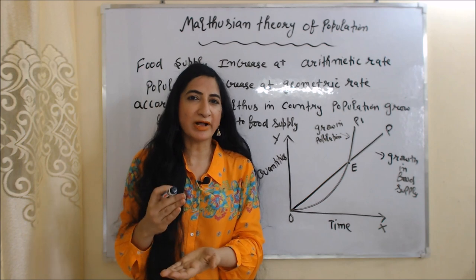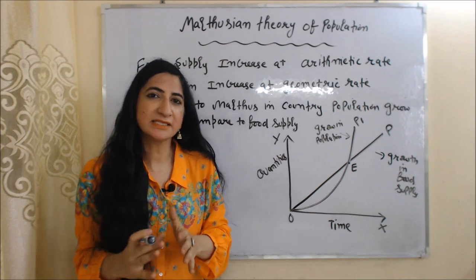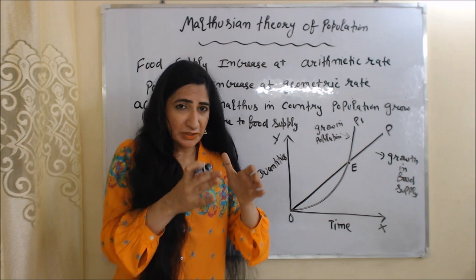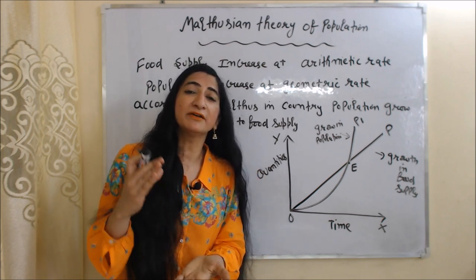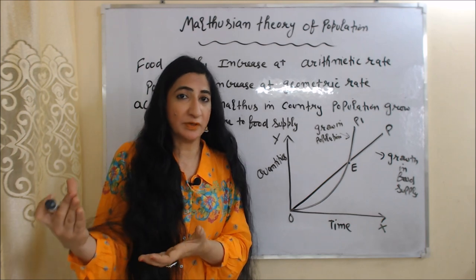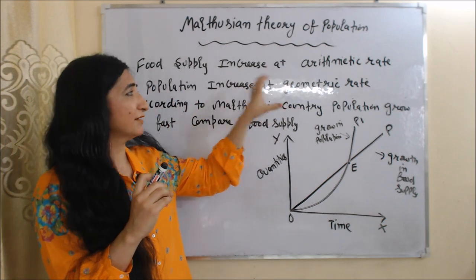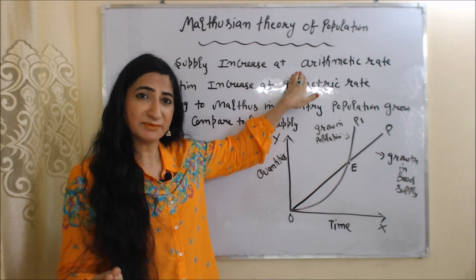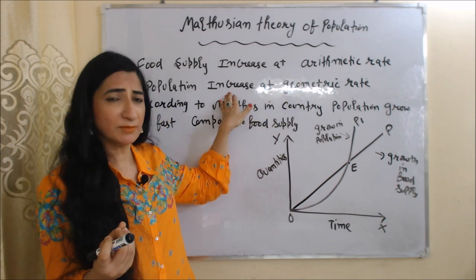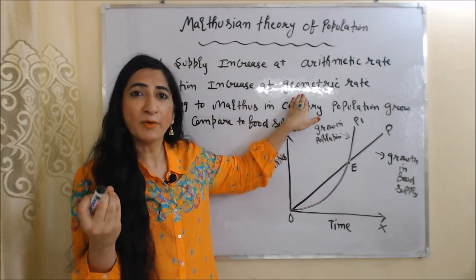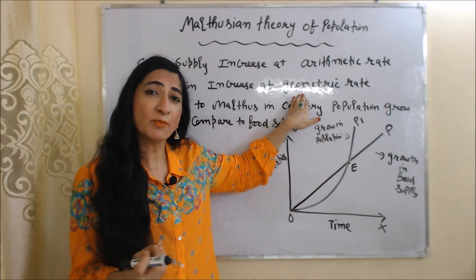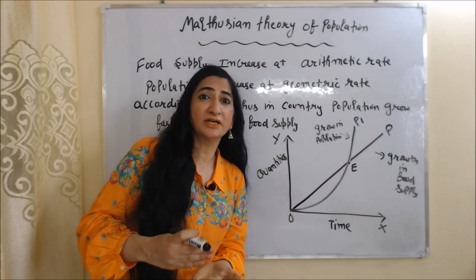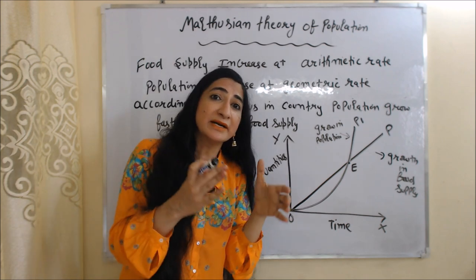First, we are going to talk about the Malthusian theory of population. In this theory, Malthus basically tells us the relation between food supply and population. According to him, population grows very fast compared to food supply. Malthus says that food supply increases at an arithmetic rate — meaning at a very slow rate — while population increases at a geometric rate, meaning at a very fast rate.